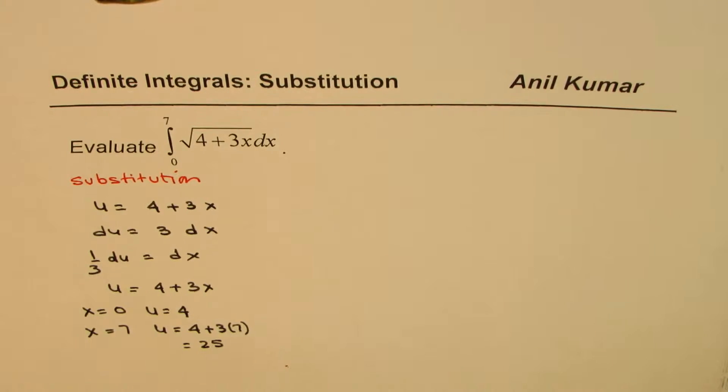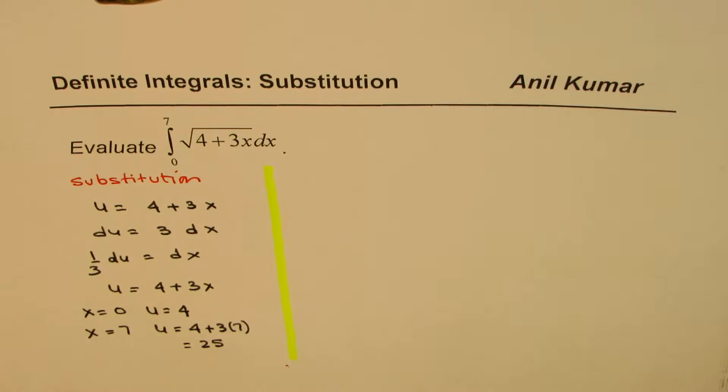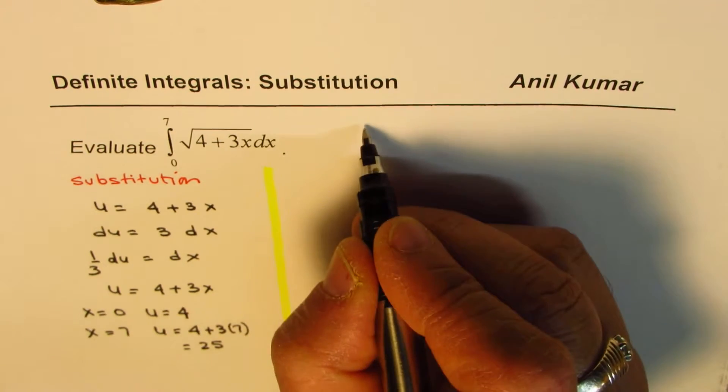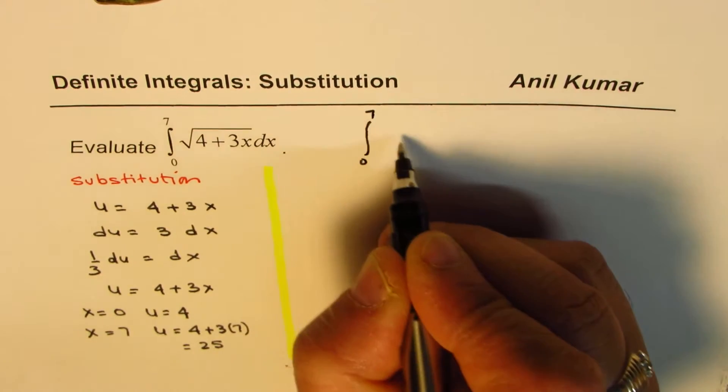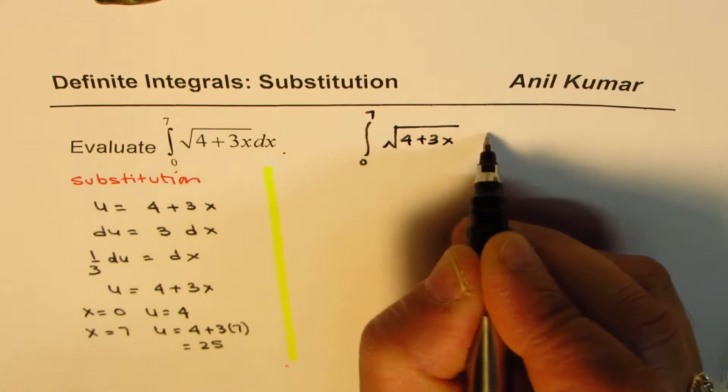Now, whenever you make substitution, ensure that the limits of the integral are also accordingly changed. So, we could write this. Let me rewrite the question here again. It is from 0 to 7, square root of 4 plus 3x dx.